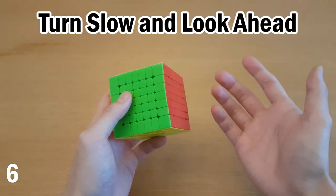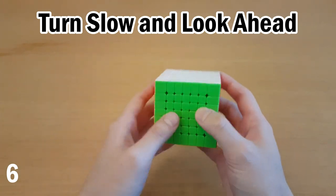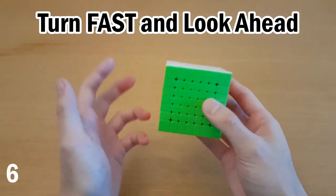Number six, turn fast and look ahead. You may have heard the phrase for three by three, turn slow and look ahead. That's because if you turn at your fastest, you can't see pieces. But on seven by seven and six and five, you can see pieces even if you're turning really fast.